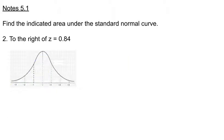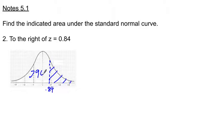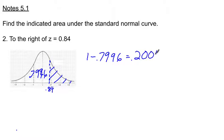For the area to the right of z equals 0.84, we use the same z-score but look to the right. We already know the area to the left was 0.7996. Since we want the complement, we do 1 minus 0.7996, which gives us 0.2004 as the area to the right of z = 0.84.